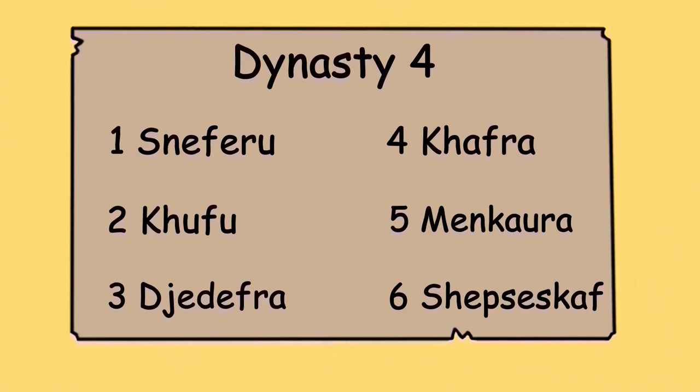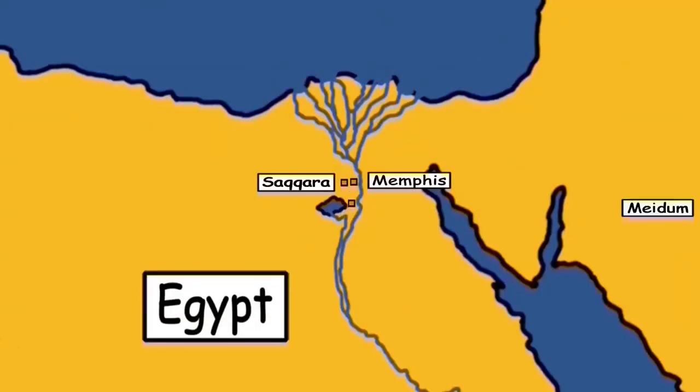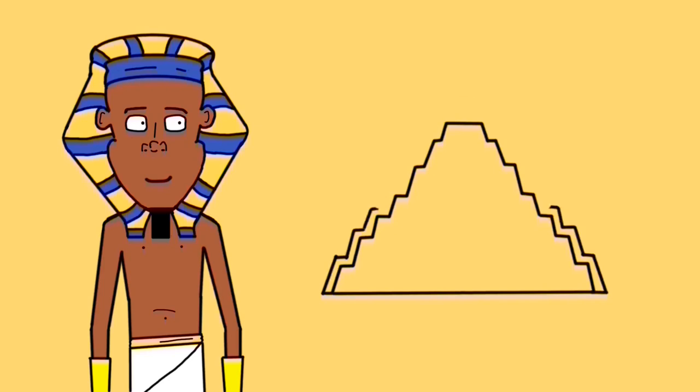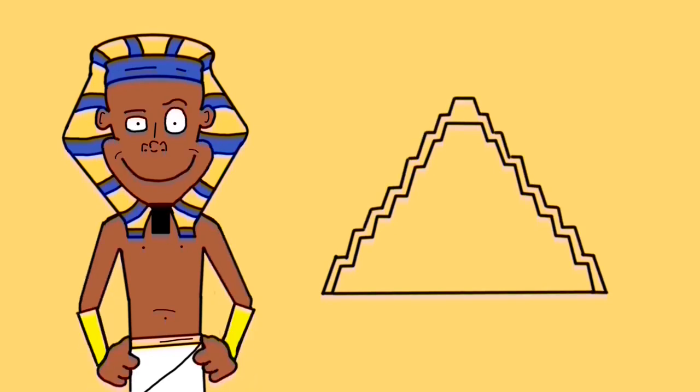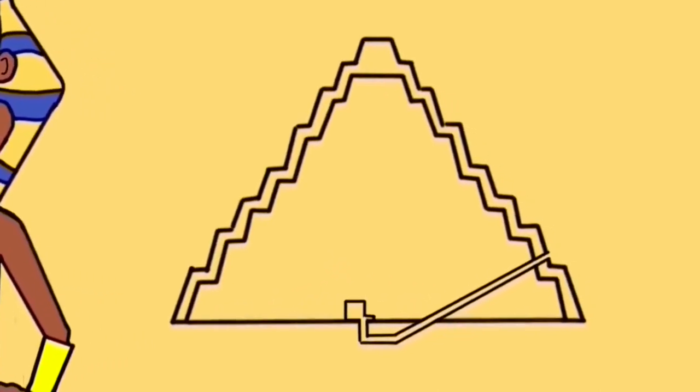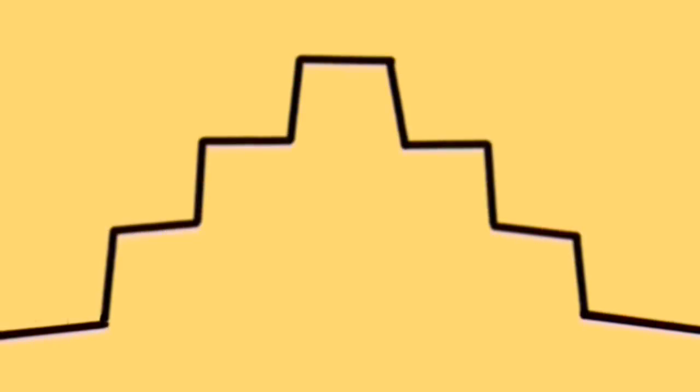The first pharaoh of the fourth dynasty was Sneferu, and he was the pharaoh to take pyramid building to the next level. He decided to build his pyramid at the site of Meidum. Sneferu constructed the Meidum pyramid with eight steps, and it surpassed even Djoser's in height. This pyramid was the first to have its burial chamber within the pyramid itself, as opposed to underneath. The challenge was to ensure that the ceiling of the chamber could take the weight of the stone above it to prevent a cave-in. The solution in achieving this was to construct the ceiling with stone blocks that got closer together as they rose, creating an A shape which would distribute the weight accordingly.